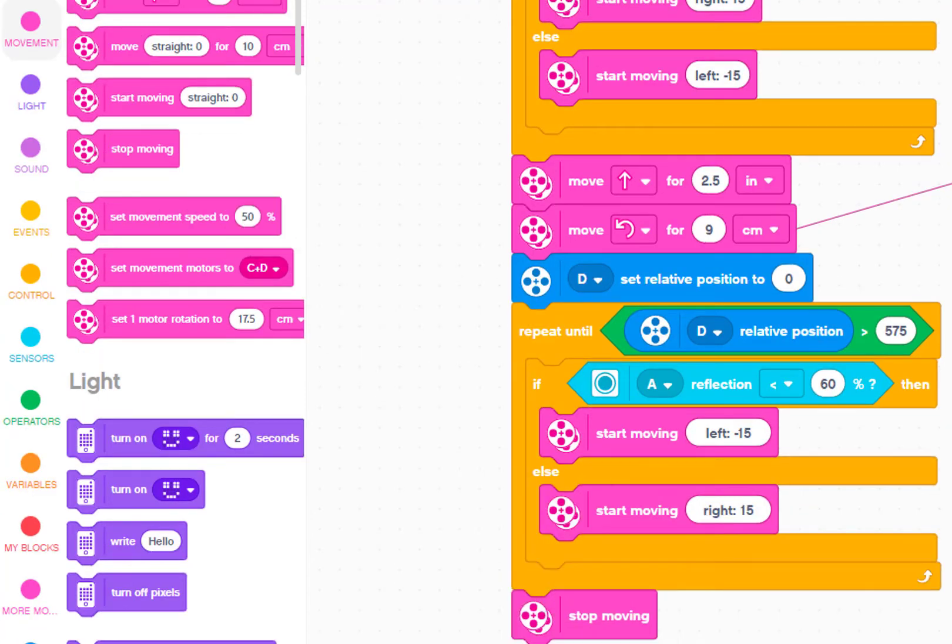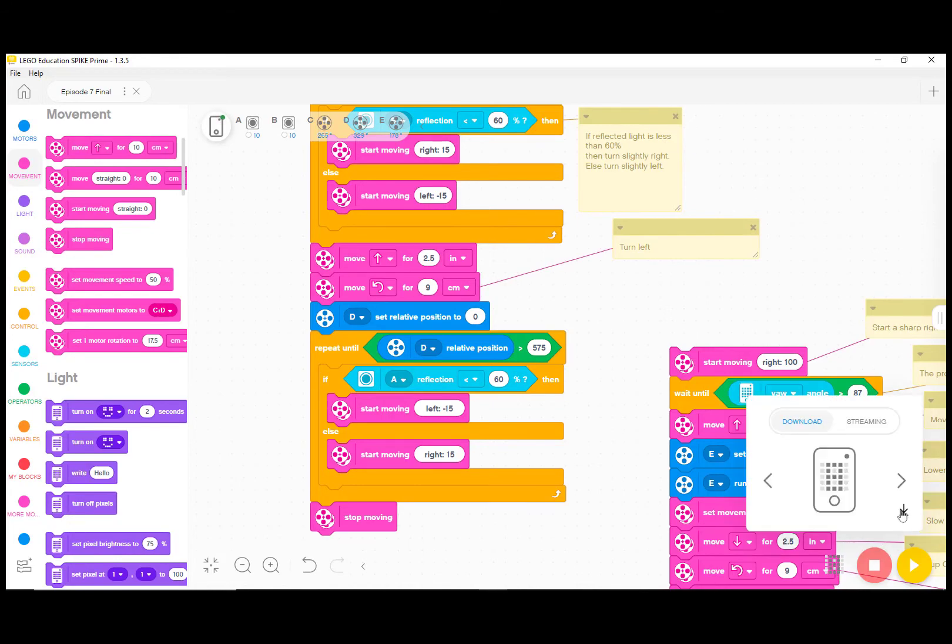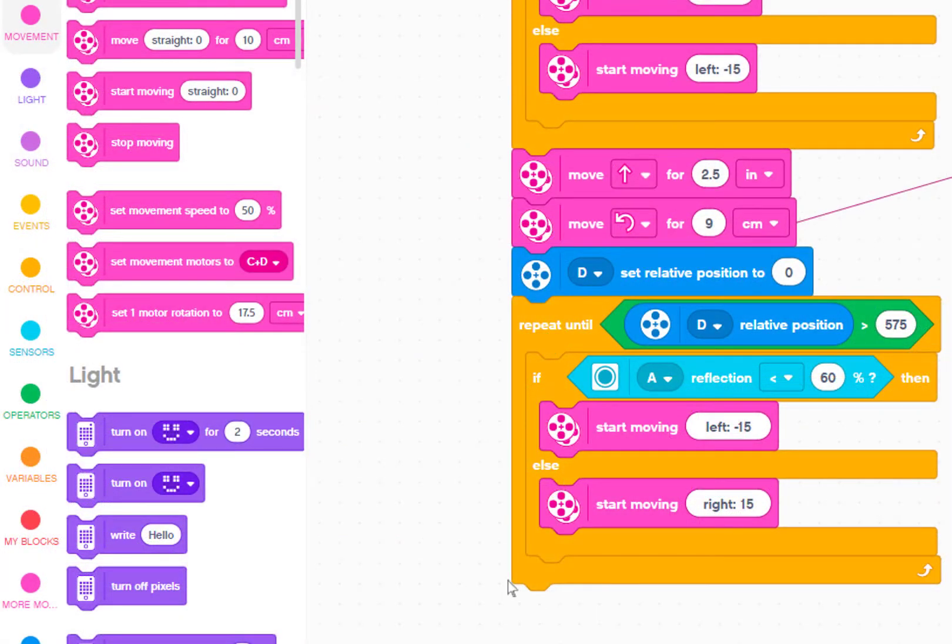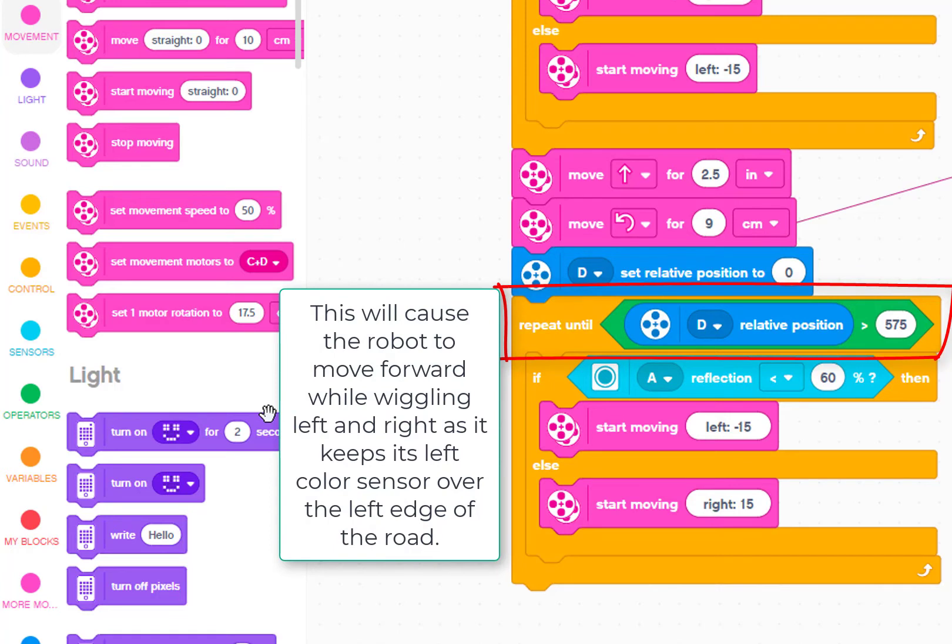Let's save our improved program and then read the new part. Set the motor connected to port D to the relative position of zero degrees. Repeat until the motor connected to port D reaches a relative position greater than 575 degrees.